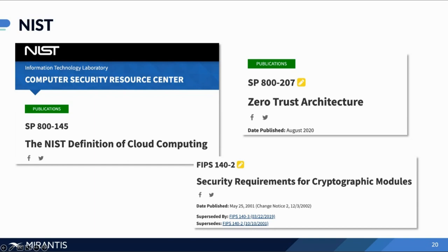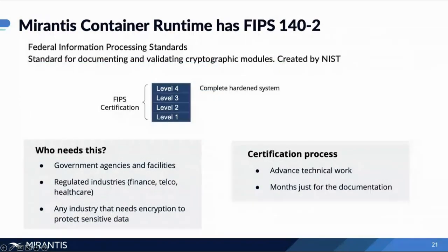FIPS 140-2 — which will be superseded by FIPS 140-3, which is quite similar — is a standard that handles cryptographic modules used by organizations to encrypt data both at rest and in motion, between different components such as the runtime. FIPS 140-2 has four different levels of security: level one provides component-level security and level four is a fully hardened system. Level one has the simplest requirements — it requires production-grade equipment and at least one tested encryption algorithm.